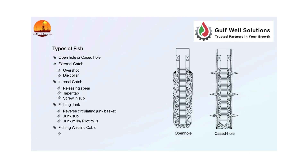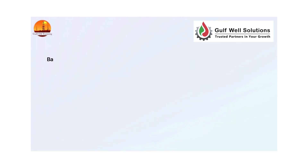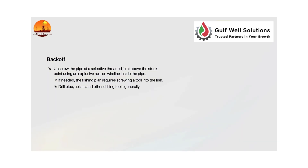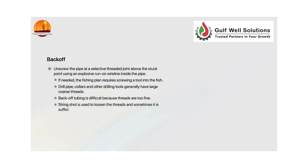Fishing wireline cables: parted line, line intact. Back off: unscrew the pipe at a selective threaded joint above the stuck point using an explosive run on wireline inside the pipe. If needed, the fishing plan requires screwing a tool into the fish. Drill pipe collars and other drilling tools generally have large coarse threads. Back off of tubing is difficult because threads are too fine. String shot is used to loosen the threads and sometimes it is sufficient to knock the pipe free.